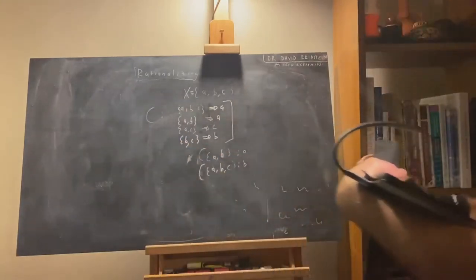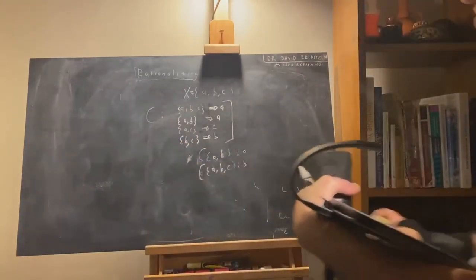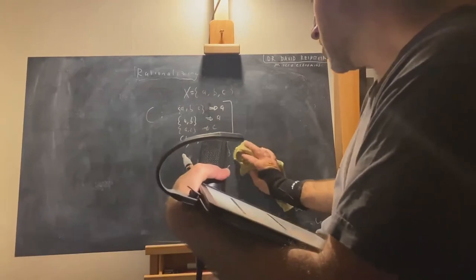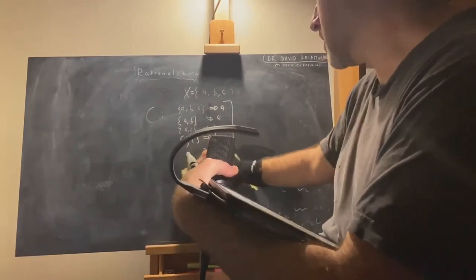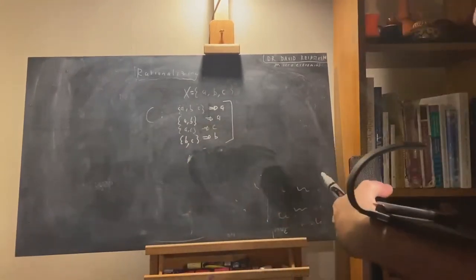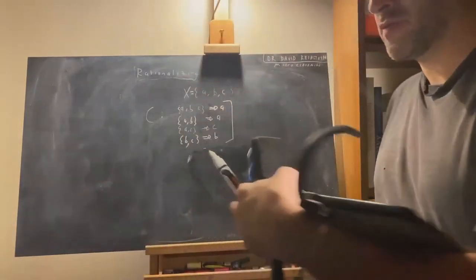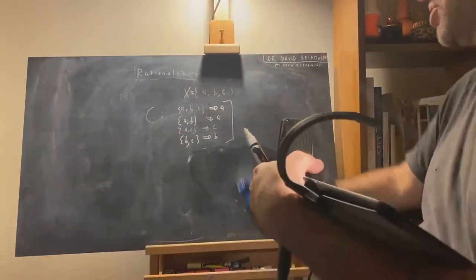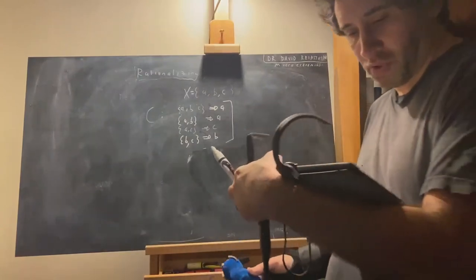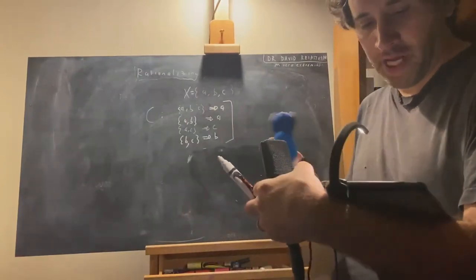So what preferences, what preference relation could rationalize these choices where we're considering these choices always being the best possible thing that I can choose? We're considering, in other words, what preference relation could we state that someone would make these choices and these always be strictly preferred to the other, to the next best thing?